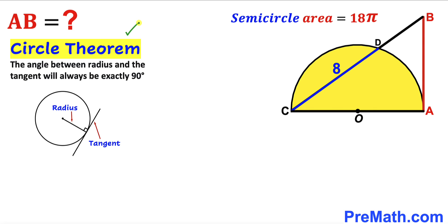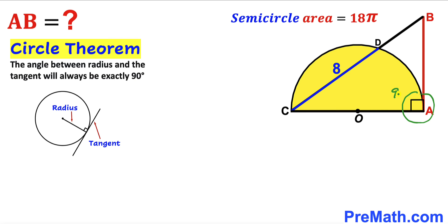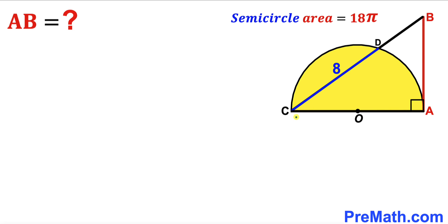Let's recall the circle theorem. According to this theorem, the angle between the radius and the tangent will always be 90 degrees. In our case, angle BAC is going to be 90 degrees, since this is our radius and this is our tangent line.